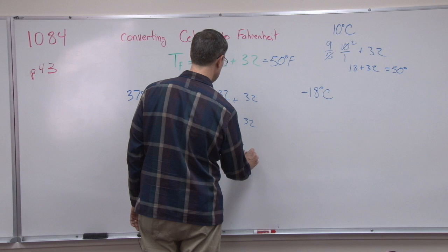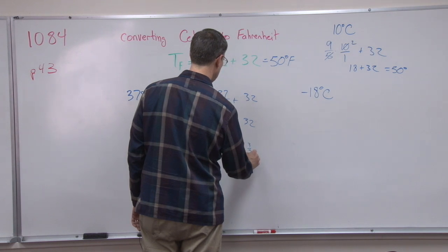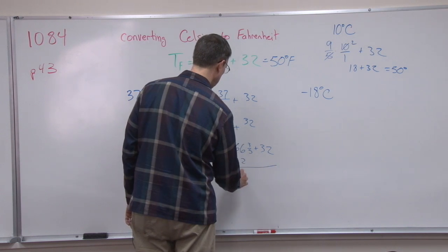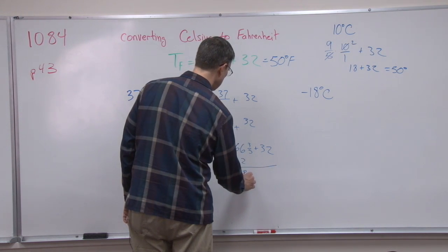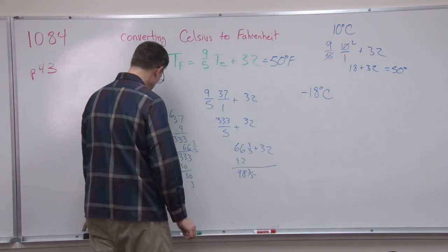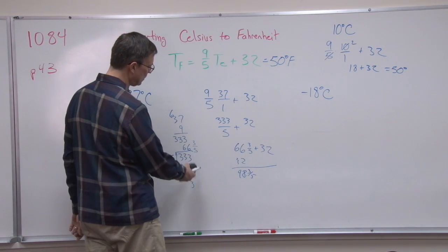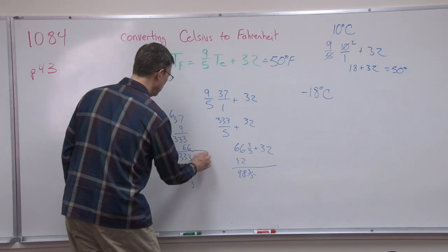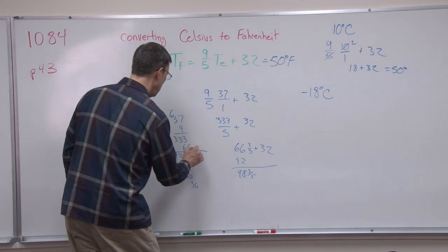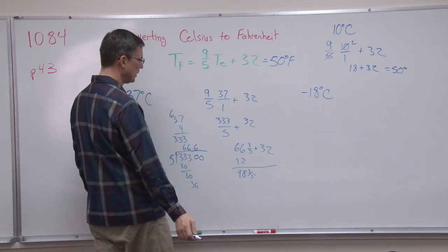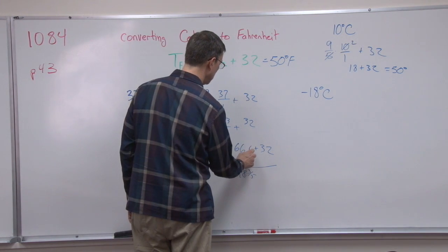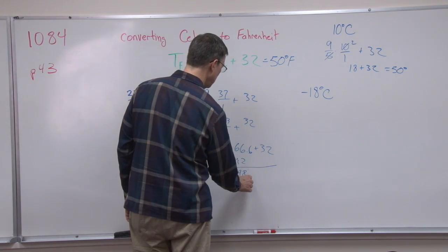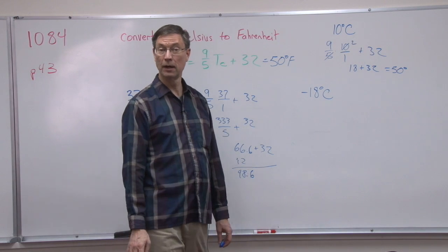So 66 and 3/5 plus 32. You know what I should have done? I mean this is a way of doing it, but let's carry it out to a decimal. So I'm going to add .00, and now I get .6, 66.6. And now when I add the 32, I get 98.6.